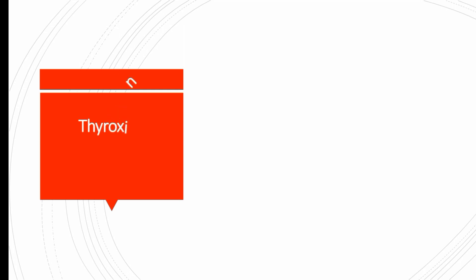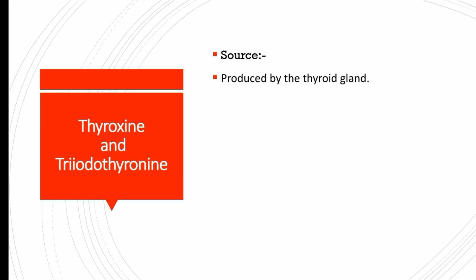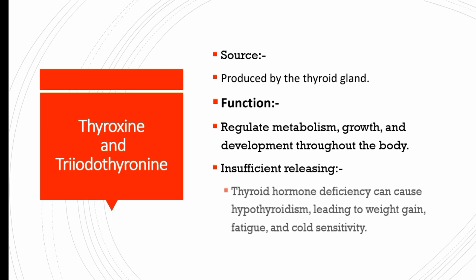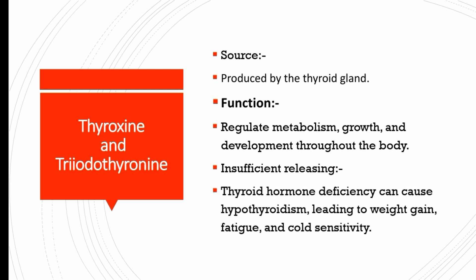The next important hormones released in the human body from the thyroid glands are thyroxine and triiodothyronine. These are released from the thyroid glands and they regulate metabolism, growth, and development throughout the body. A deficiency of thyroid hormones causes hypothyroidism, leading to weight gain, fatigue, and cold sensitivity.